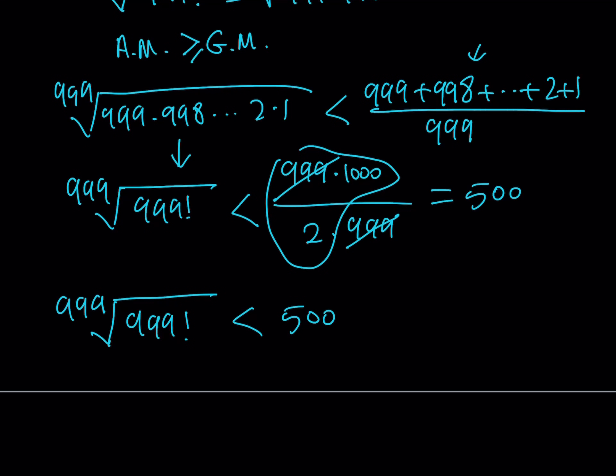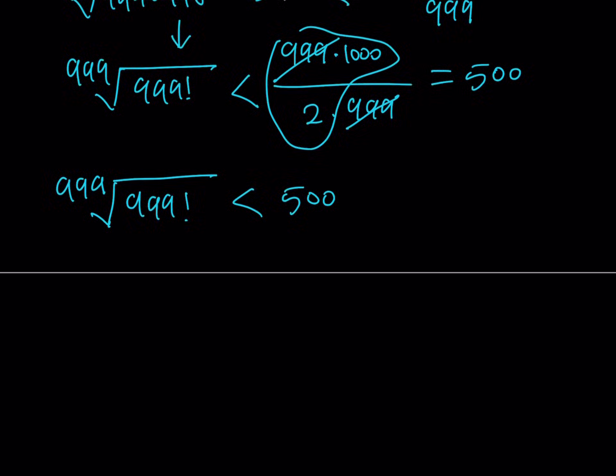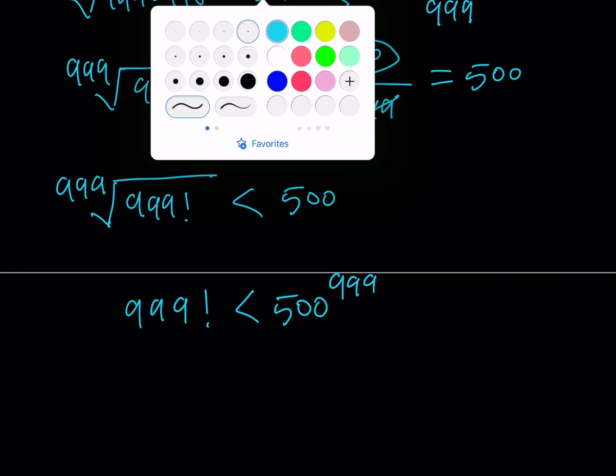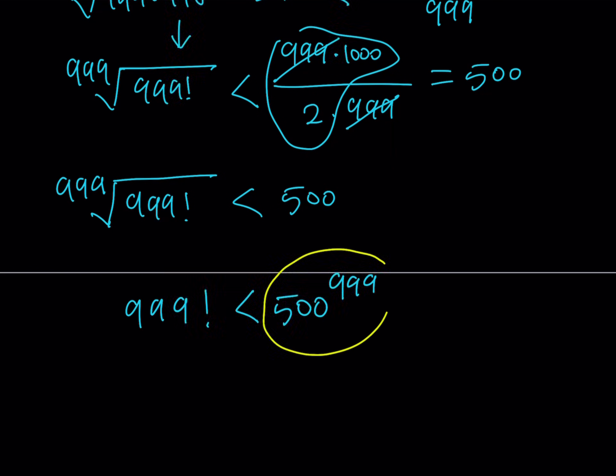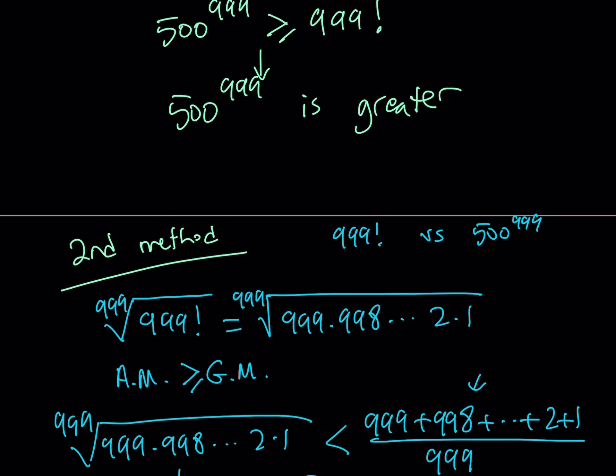Now since both of these quantities are positive, I can raise both sides to the power 999, and that gives me 999 factorial is less than 500 to the power 999. Therefore, the larger number in this case is going to be, again, 500 to the power 999, as we figured out with the first method.